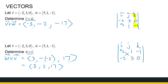What do we notice about V cross W versus W cross V? They're not equal, so the cross product does not have the commutative property. But they are very similar — the same magnitude but in opposite directions. So V cross W and W cross V are scalar multiples of minus 1 of each other.